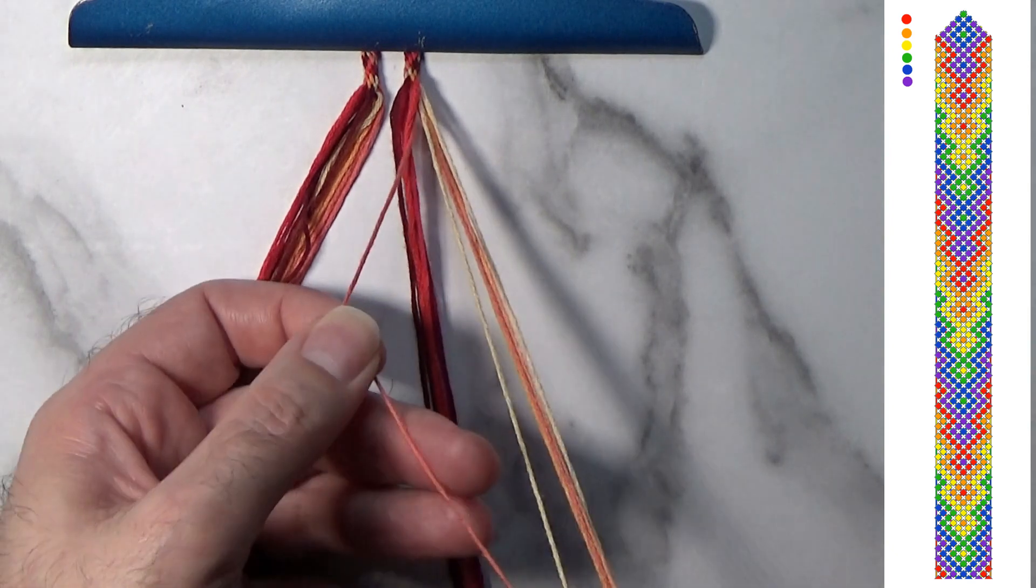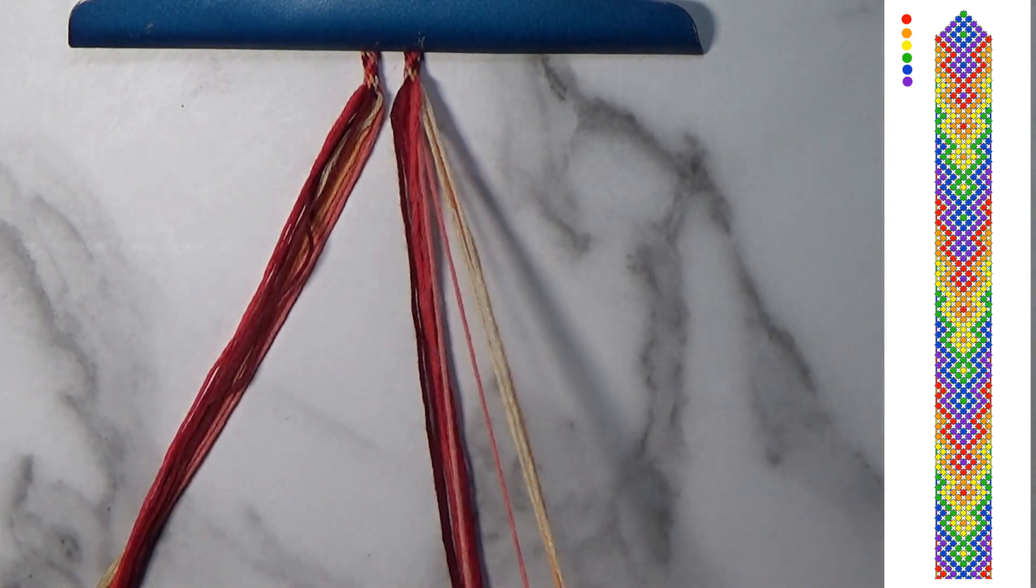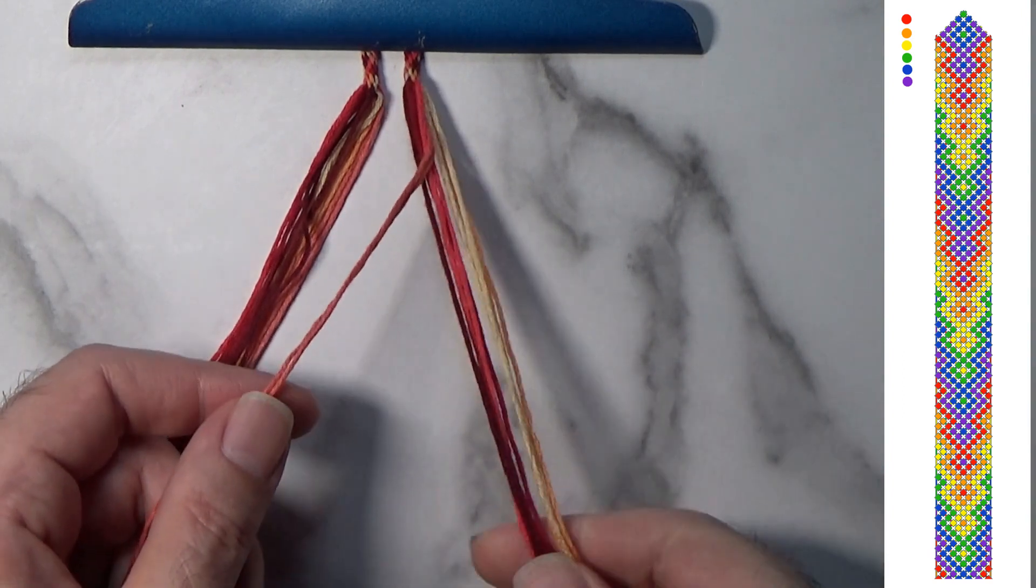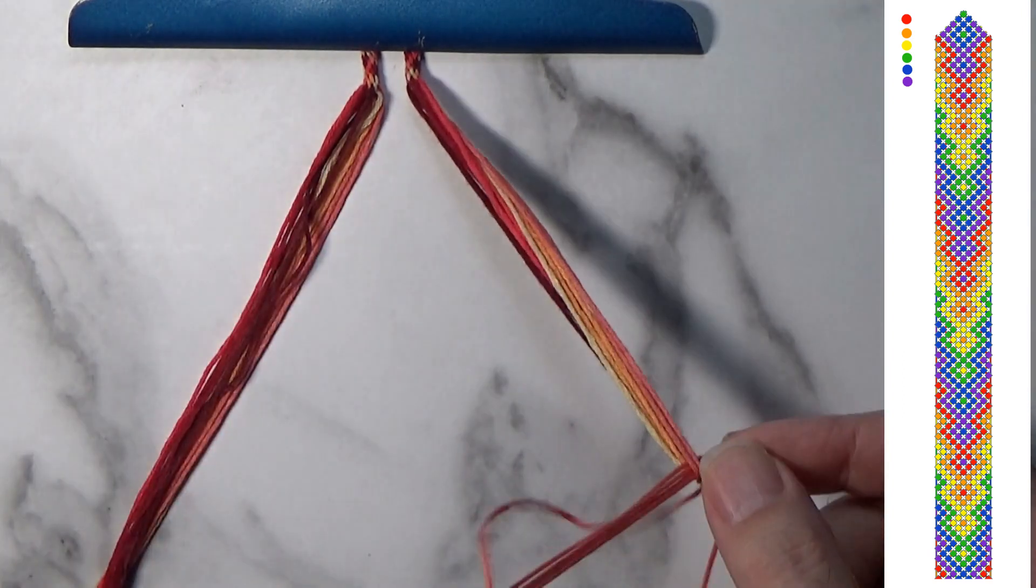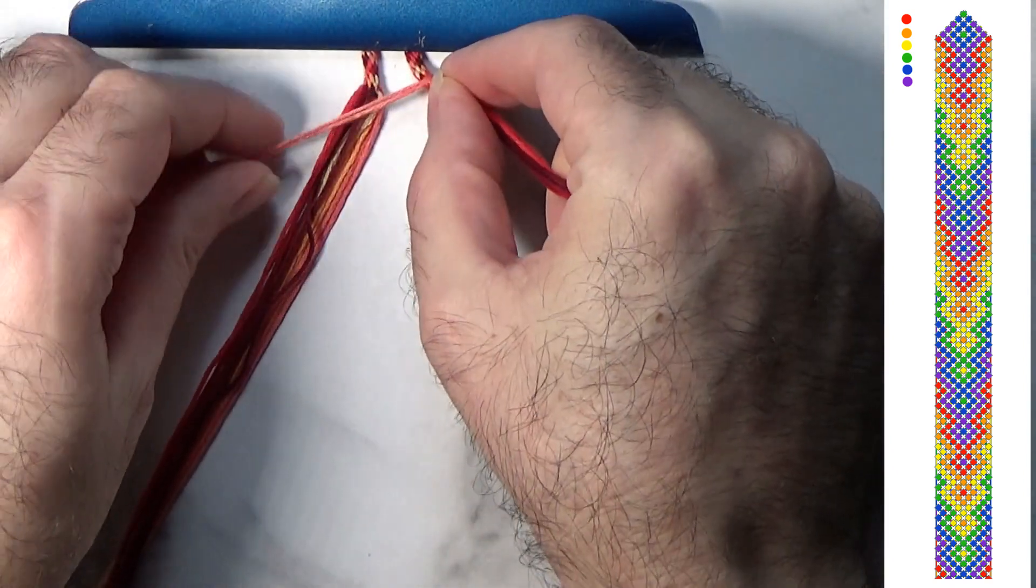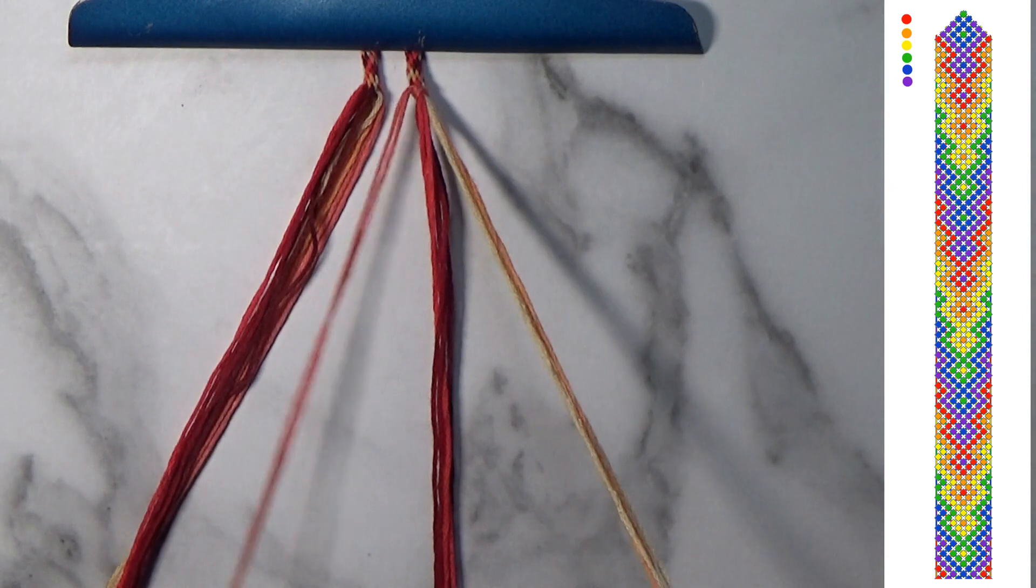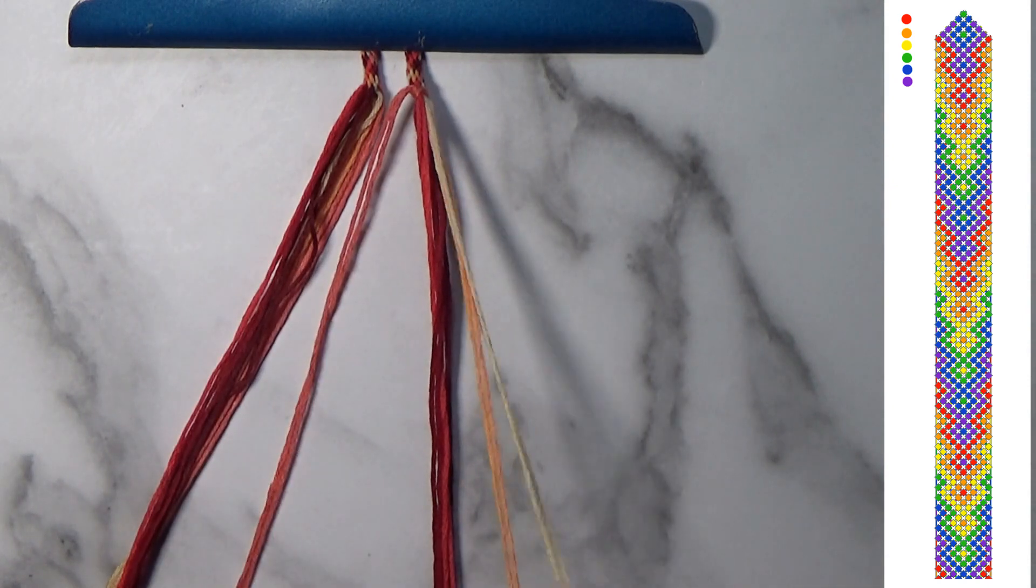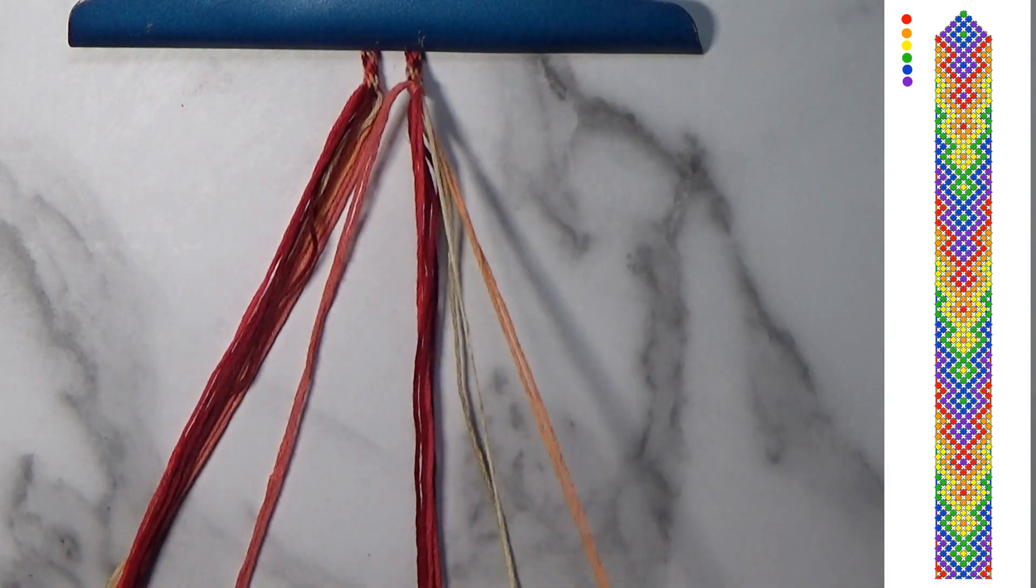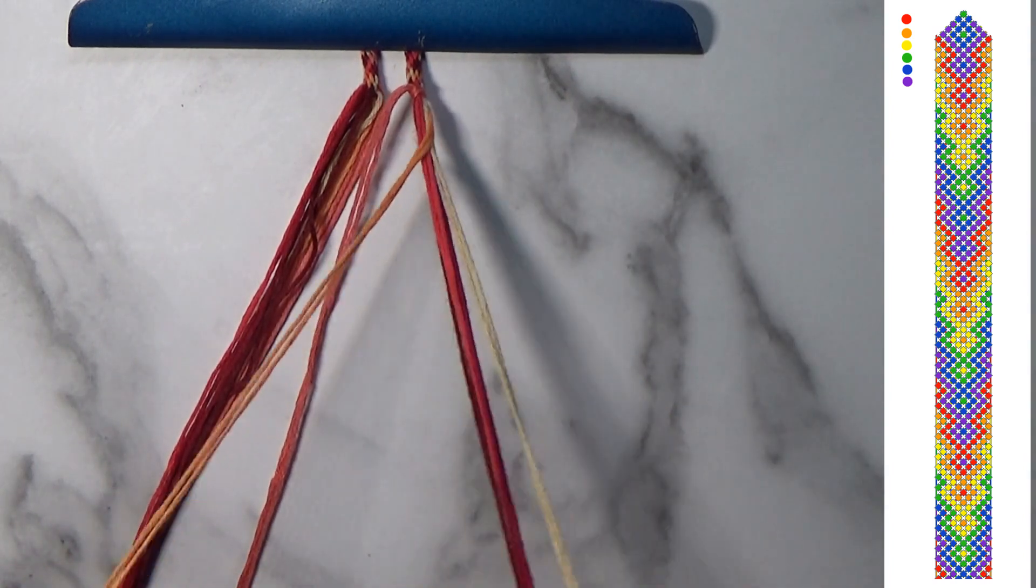Oftentimes with my patterns I don't actually use the colors exactly like what I'm going to make. Since it's six colors it's easy to use the rainbow to be able to figure everything out. So basically if red is number one and orange is number two and yellow is number three then green is four, blue is five, and purple six.